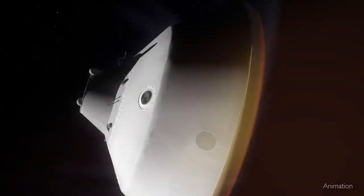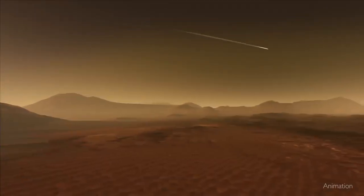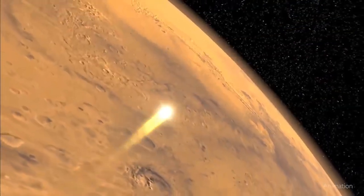But the majority of that deceleration was caused by the Martian atmosphere creating drag on the rover's heat shield, and that heat shield went through a lot to keep the spacecraft safe.